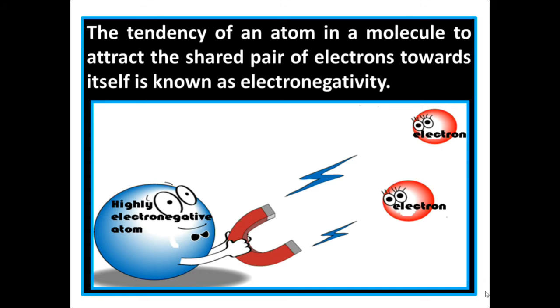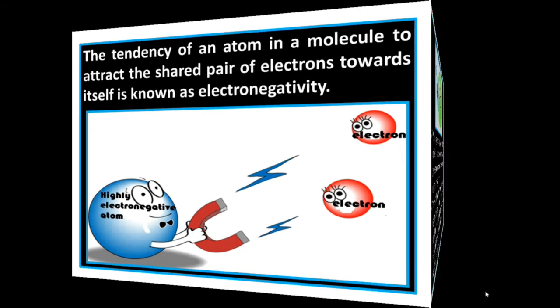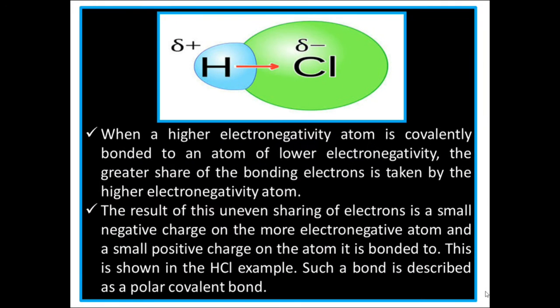Highly electronegative atoms attract the electrons. Observe the diagram. HCl: Hydrogen is slightly positive and chlorine is slightly negative. Why does it happen?